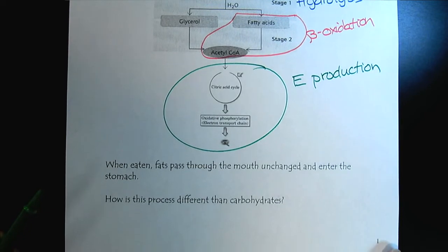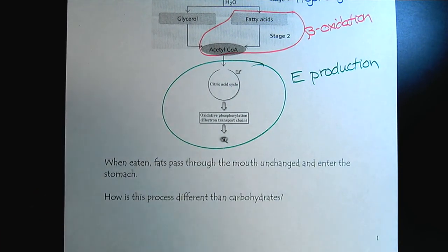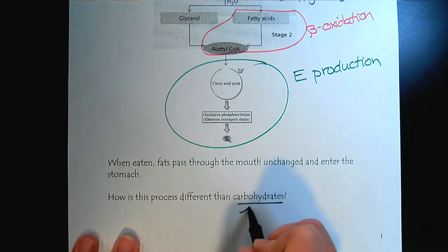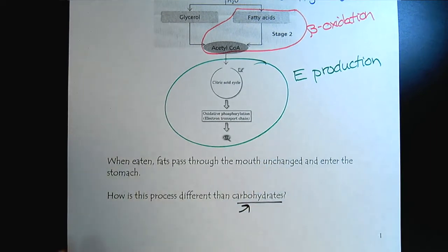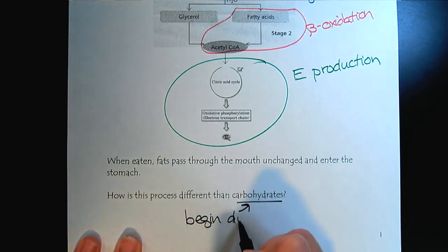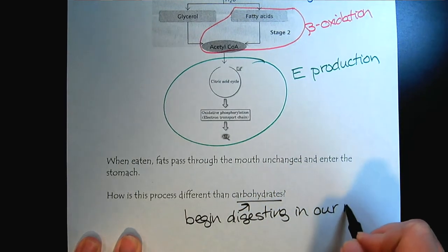So thinking about it in words and then a picture. So let's look at what happens. So how do we eat fats? Well, we've got to chew them. So when eaten, fats pass through the mouth unchanged and enter the stomach.